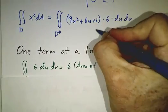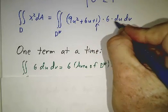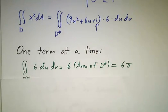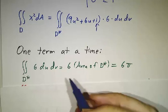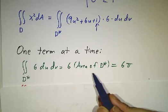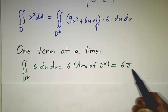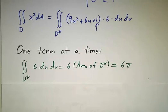First we're going to look at this term, 1 times 6 dU dV. Well, the integral of 6 dU dV is just 6 times the area. The area of the unit disk is pi, pi r squared, so that gives us 6 pi.